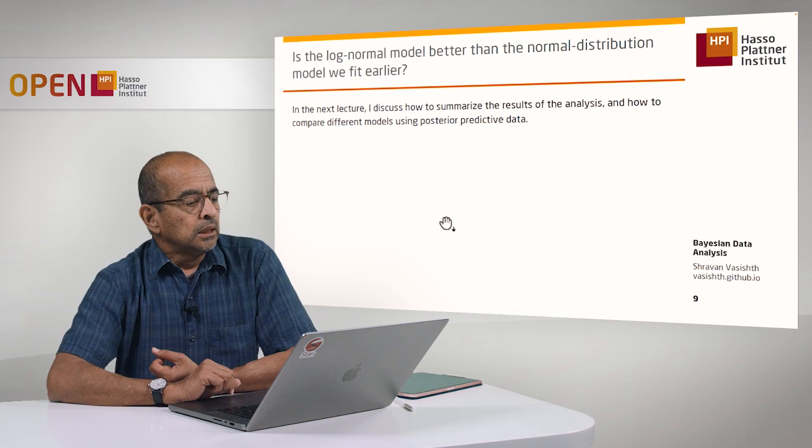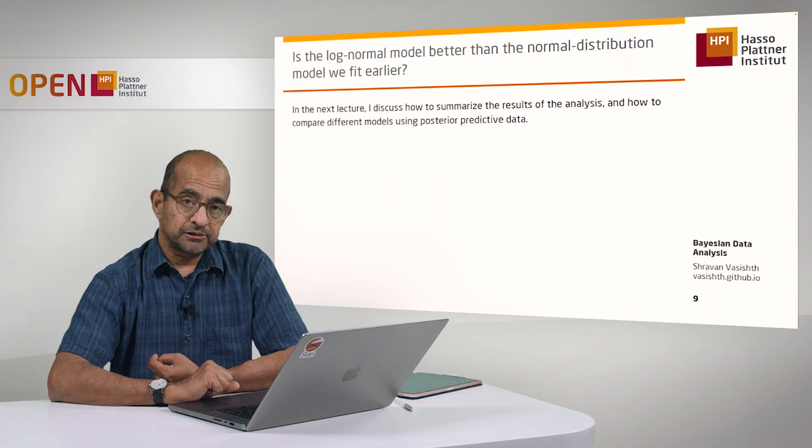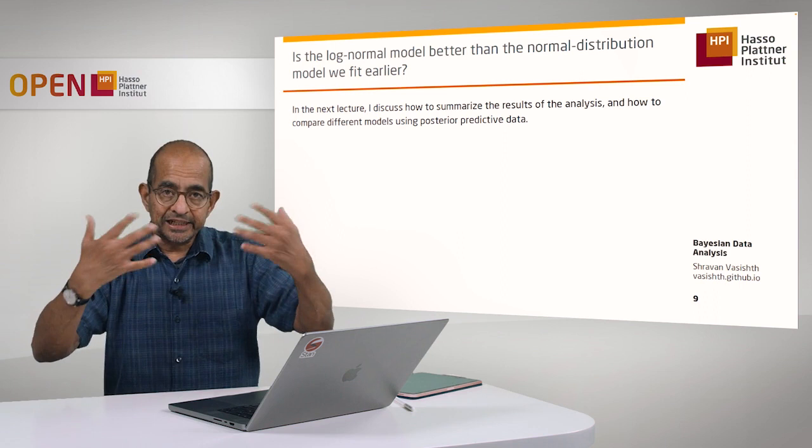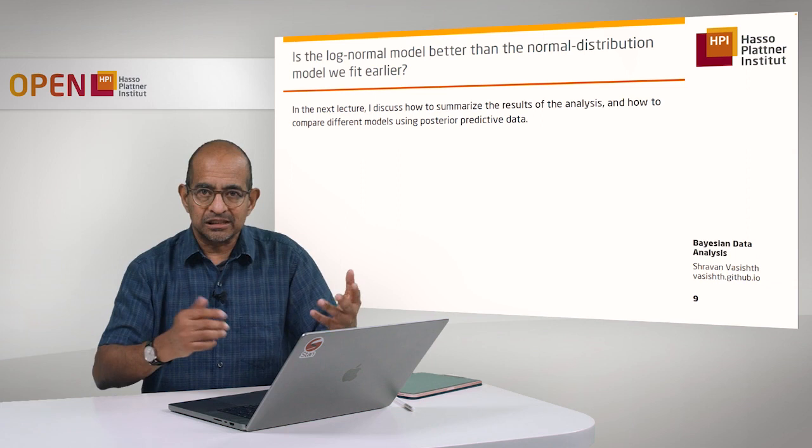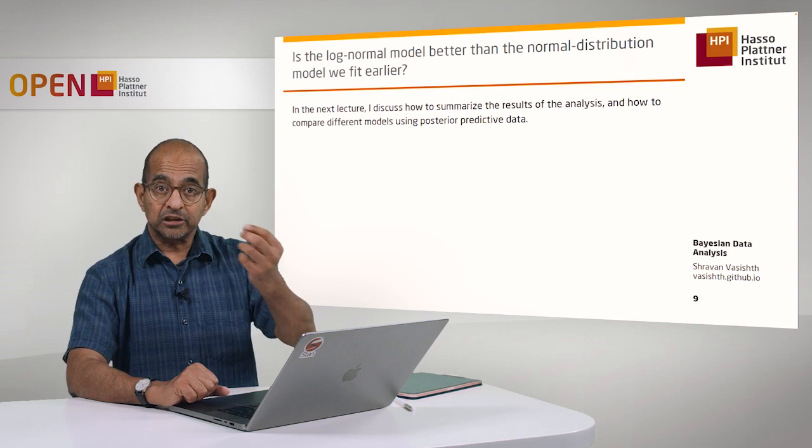What I'm going to do next, in the next lecture, I will summarize the results of the analysis and I will also show you how to compare different models using posterior predictive data. The posterior predictive data that different models will generate—we can compare them to see which model makes more sense for the given data that we have. That's how we actually do data analysis when we're trying to decide on a likelihood and decide on priors. We look at the prior and the posterior predictive data to decide which kind of likelihood I'm going to choose or which kind of priors we're going to choose. So that's coming up next.